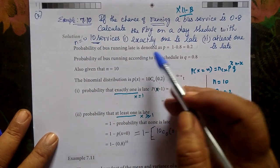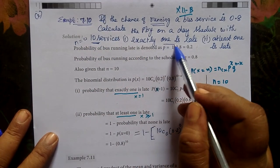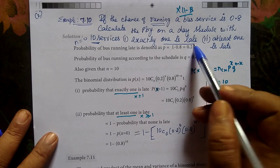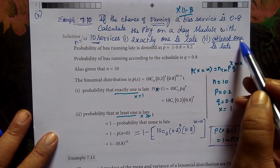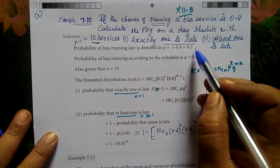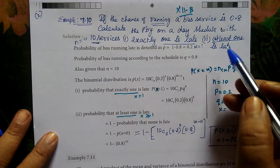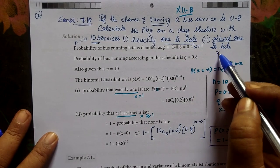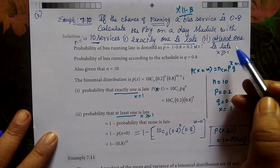Part i: exactly one is late. Part ii: at least one is late. Exactly means x equals 1. At least means x greater than or equal to 1.